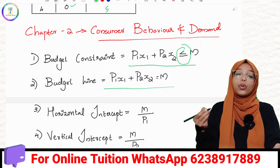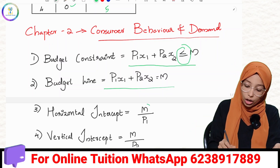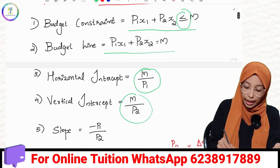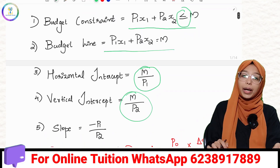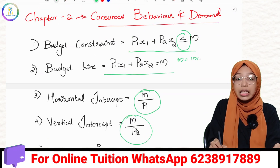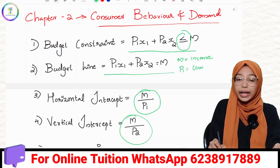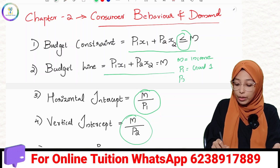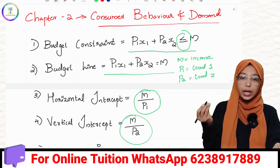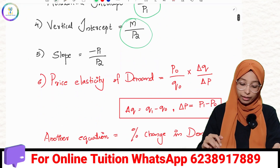P1X1 plus P2X2 equals M — the budget line equation. The horizontal intercept is M by P1, the vertical intercept is M by P2, and the slope is minus P1 by P2. In this case, M is the consumer income, P1 is good 1, P2 is good 2, X1 is good 1, and X2 is good 2.